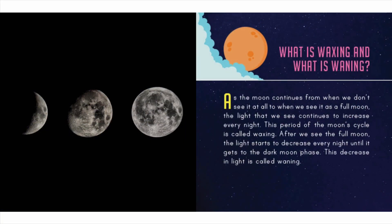As the moon continues from when we don't see it at all to when we see it as a full moon, the light that we see continues to increase every night — this period of the moon cycle is called waxing. After we see the full moon, the light starts to decrease every night until it gets to the dark moon phase; this decrease in light is called waning.